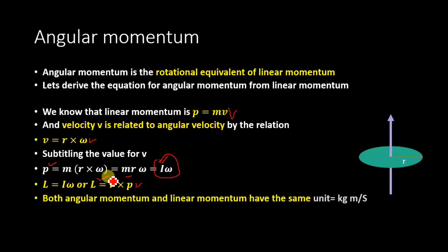Both angular momentum and linear momentum have the same unit kilogram meter per second and both have the same dimension of MLT to the power minus 1.